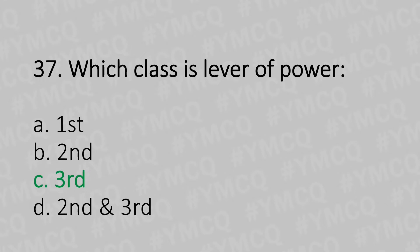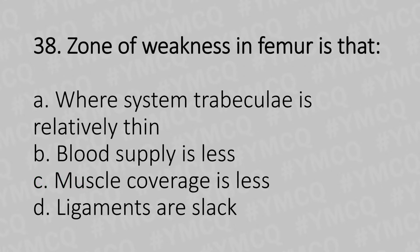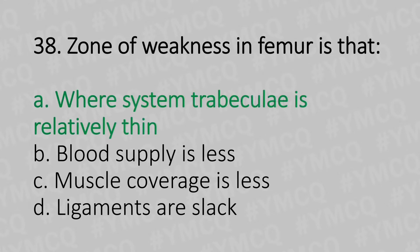Moving to our 38th question. The zone of weakness in the femur is where: Option A: The system trabeculae is relatively thin. Option B: Blood supply is less. Option C: Muscle coverage is less. Option D: Ligaments are slack. And the answer is Option A: Where the system trabeculae is relatively thin.